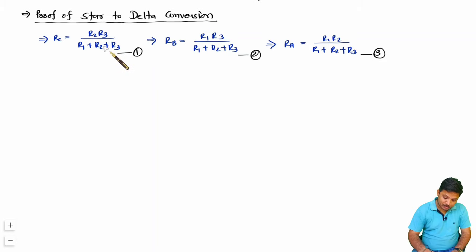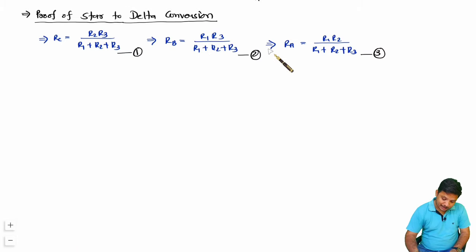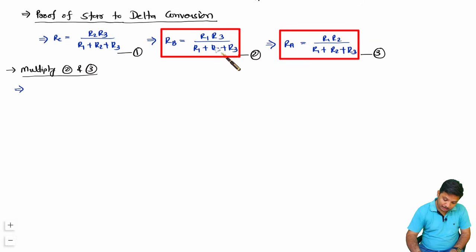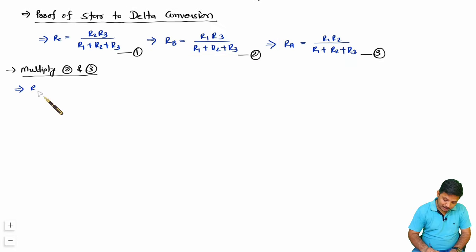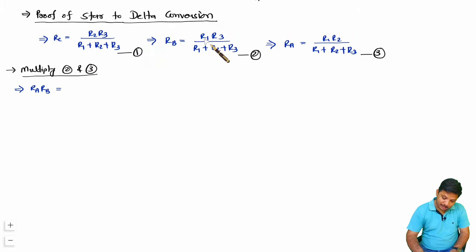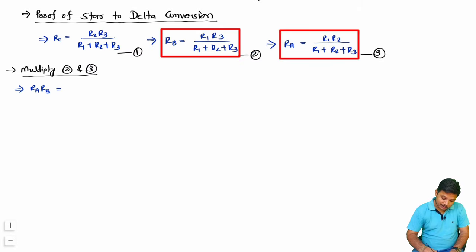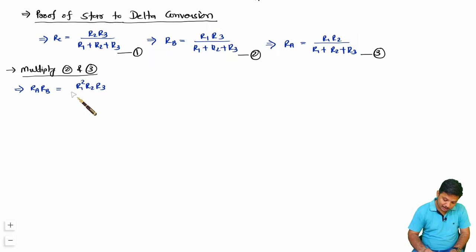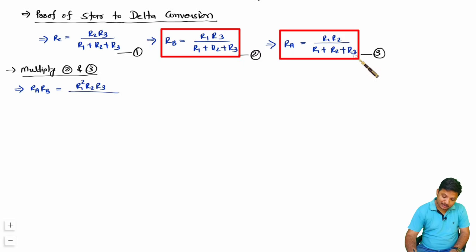First, multiply equation 2 and equation 3 — that is, multiply RA and RB. On the left-hand side we get RA·RB, and on the right-hand side we get R1²·R2·R3 divided by (R1 + R2 + R3)². Call this equation A.